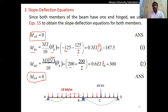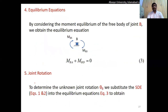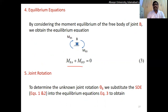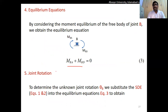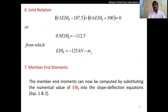Writing the equilibrium equation at the only interior support B: M_BA + M_BD = 0. Substituting and solving: EI·theta_B = −125 kN·m². Once we have EI·theta_B, we find M_BA = −225 kN·m and M_BD = +225 kN·m.